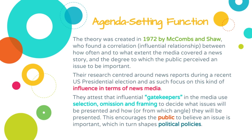The agenda setting function theory was first created in 1972 by McCombs and Shaw. Together they found a correlation — an influential relationship — between how often and to what extent the media covered a news story and the degree to which the public perceived that issue to be important. Their research centred around news reports during a presidential election, and the focus was on the kind of influence of news media in shaping people's perceptions about that election.